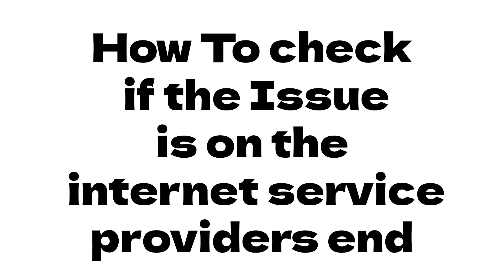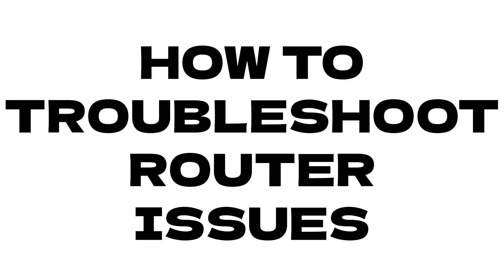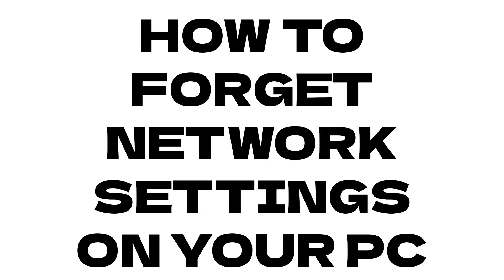Before we jump into that, let's take a quick second to highlight what we're covering today. Number one: how to check that your internet service provider is not the issue — sometimes it's not your fault that your internet's not working, it's the company you're paying for internet. Number two: physical equipment — we're going to talk about the router, router issues, and how to reboot and reset it, because reboot and reset are two different functions. Number three: how to forget your network in your computer settings and then reconnect to that network fresh, as sometimes our computer settings are what's causing the issue.